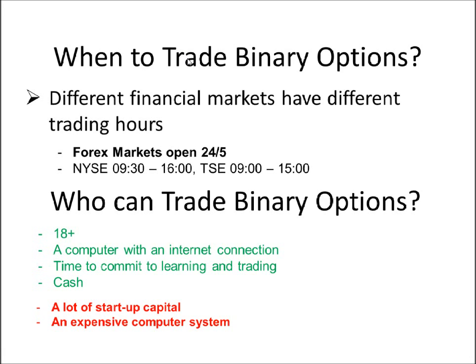So when to trade binary options? Because so many binary options are offered by a wide range of global markets, different binary options can be traded at different times of the day, as different financial markets have different trading hours. The Forex or currency markets are open 24/5, opening Sunday afternoon US time and closing Friday afternoon US time. Whereas stocks on the New York Stock Exchange can only be traded 9:30 to 4, Monday to Friday local time. Another example would be the Tokyo Stock Exchange, traded 9 to 3 local time.